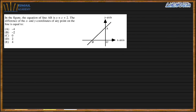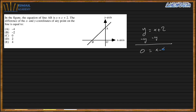Next question. In the figure, the equation of line AB is y equals x plus 2. The question asks for the difference between the x and y coordinates of any point on the line. Subtracting y from both sides: 0 equals x minus y plus 2. Then subtracting 2 from both sides: x minus y equals negative 2. So the difference between the x and y coordinates is negative 2, and B is my answer.